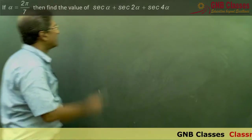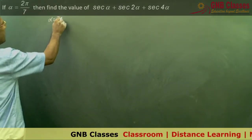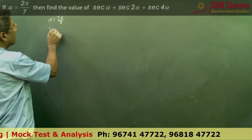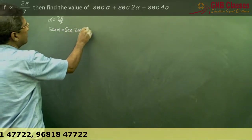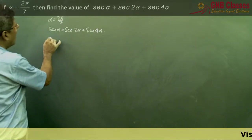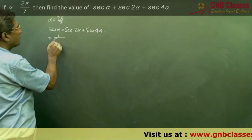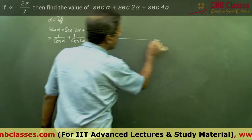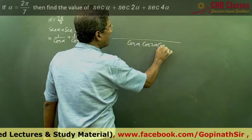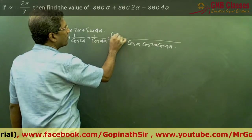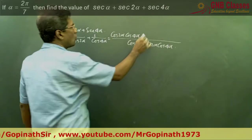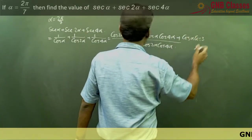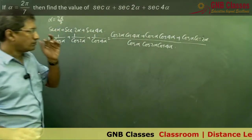Now let us take another example. Given α = 2π/7, we have to find sec α + sec 2α + sec 4α. Converting sec to cos: 1/cos α + 1/cos 2α + 1/cos 4α. Taking the LCM, the denominator becomes cos α · cos 2α · cos 4α.